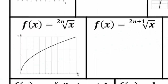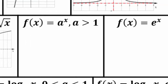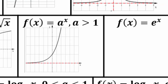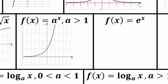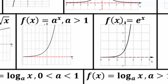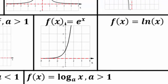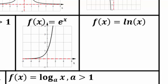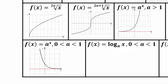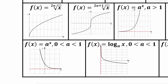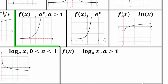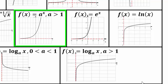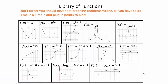One over x to an odd power has one end going down from the left and the other going up, with x equals 0 and y equals 0 still as asymptotes. Even root gives that half-parabola shape; odd root gives the S shape. Exponential functions when a is greater than 1 give that growth curve — e is approximately 2.71. Natural log x is log base e, the inverse of e to the power x. When a is between 0 and 1 you get exponential decay, and the log base a graph is its inverse.